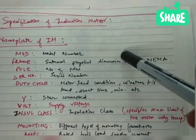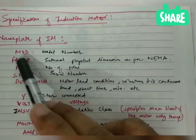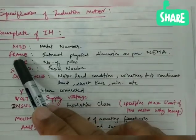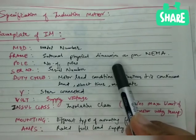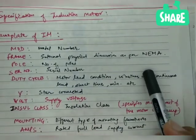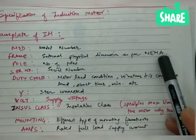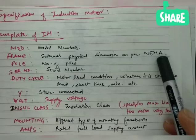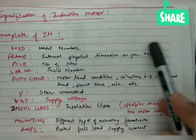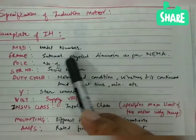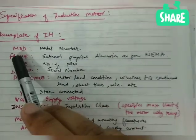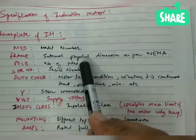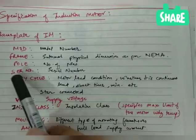First is MOD, which is the model number. Second is frame — the external physical dimensions as per NEMA. NEMA is the National Electrical Manufacturing Association, which defines some external physical dimensions. The type of frame is written on the nameplate. Then poles means the number of poles in the motor.